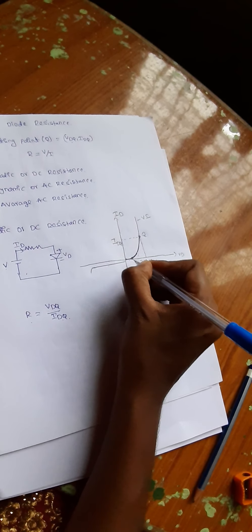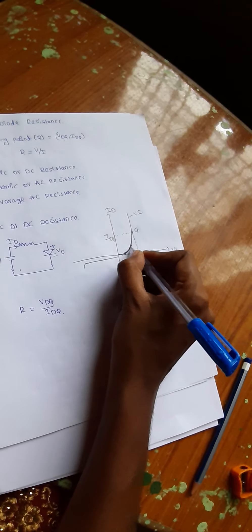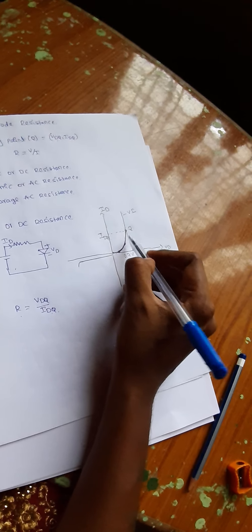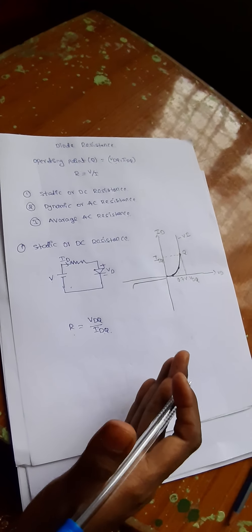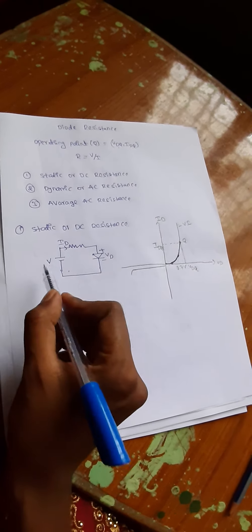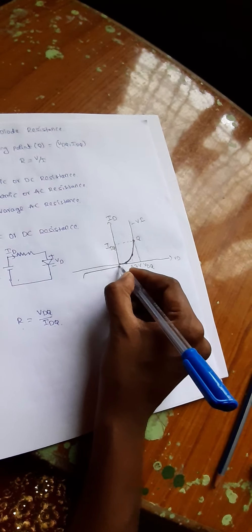From here to here we have zero milliamps, so resistance is very high. Up to the knee point, resistance remains very high. From the knee point onwards there is an increment of current, meaning resistance across the diode decreases. For static DC resistance, we can simply calculate the resistance using the operating point as Vdq over Idq. This resistance depends purely on the type of voltage applied — if it is a DC voltage, we calculate it easily using the operating point.